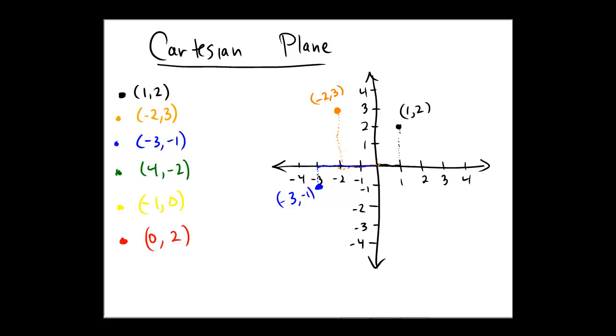Green would be 4, negative 2, so we're going to start at the origin. 4 means move 4, wow, that one's way out there, isn't it? 4, way out to the right, and then down 2 units, so maybe right about there would be a good place for 4, negative 2.